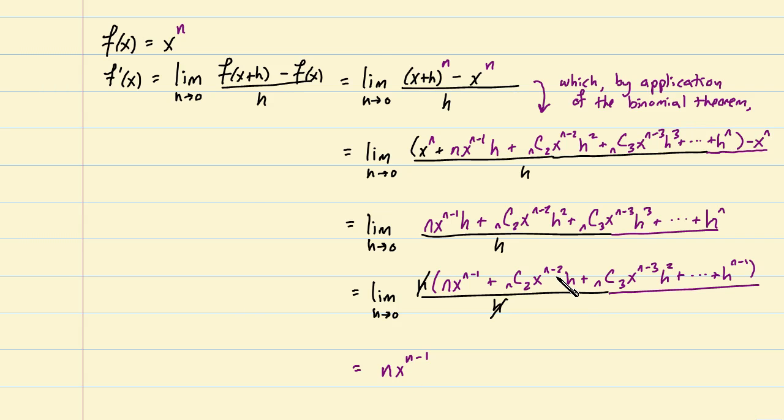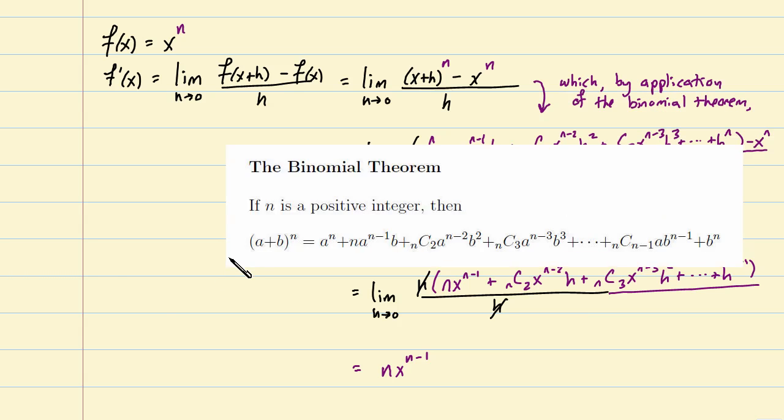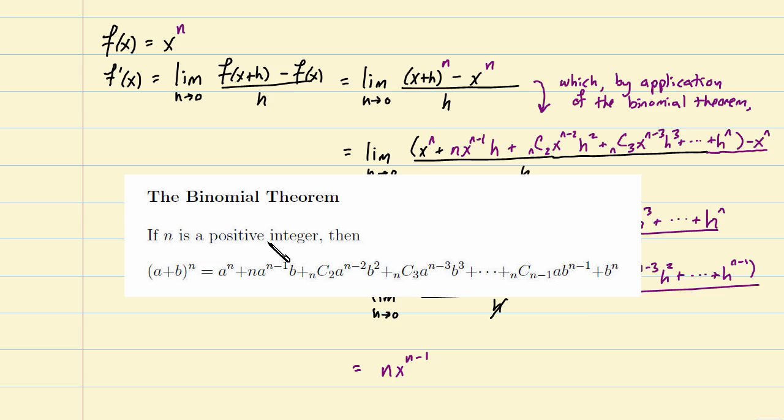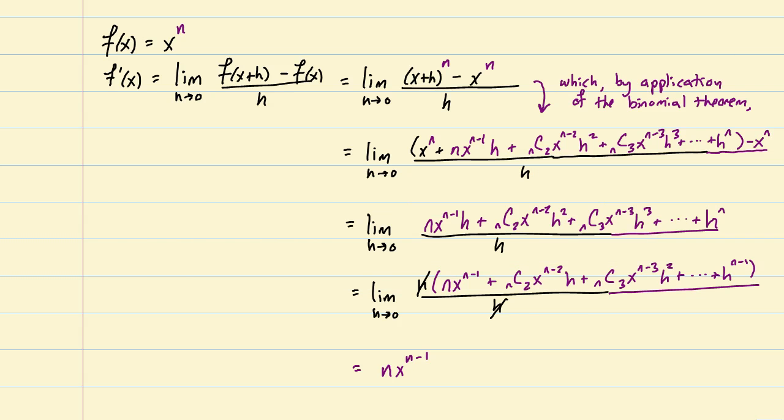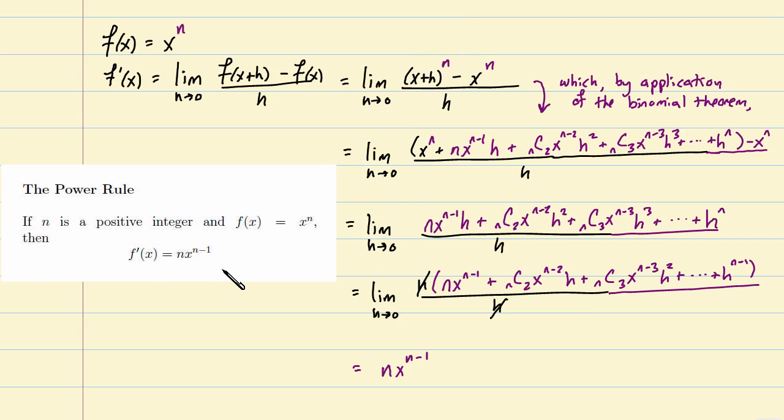Now, this is important. Remember, we just applied the binomial theorem here and the binomial theorem required that the power we're talking about is a positive integer. So we have proven that the derivative of this should be this provided n was a positive integer. We have proven what is called the power rule.